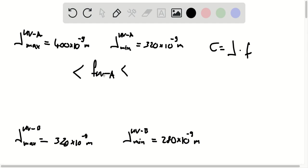And so f UVA maximum is going to be c divided by lambda UVA min. And the minimum frequency value is going to be c divided by lambda UVA max.